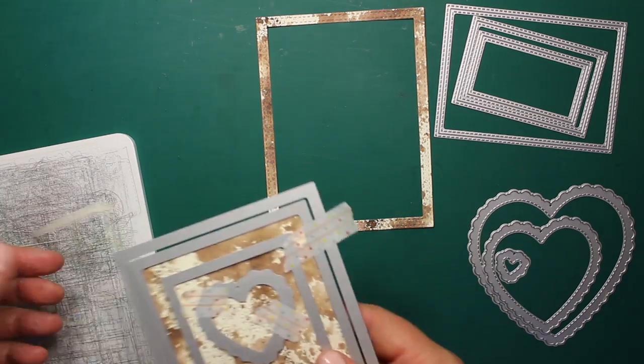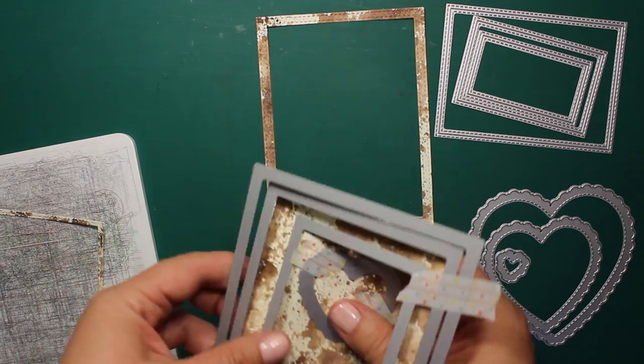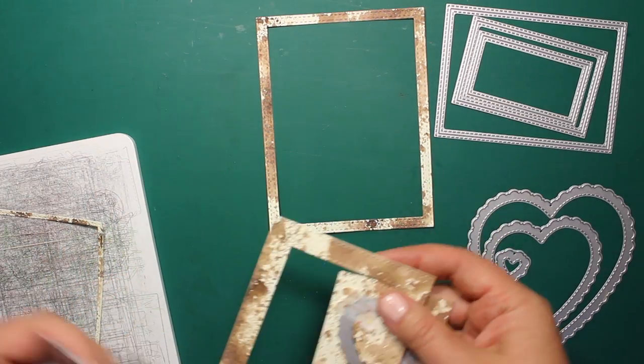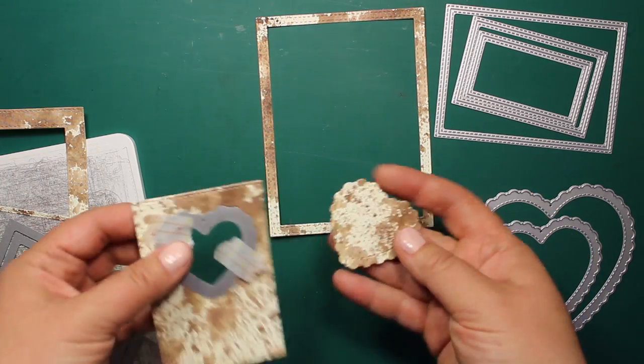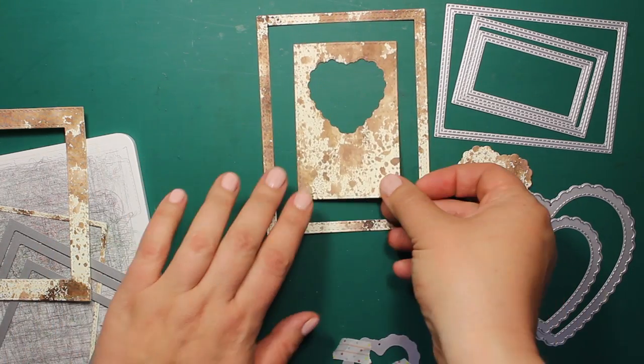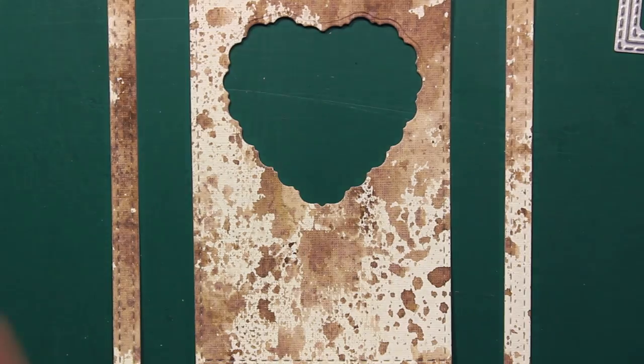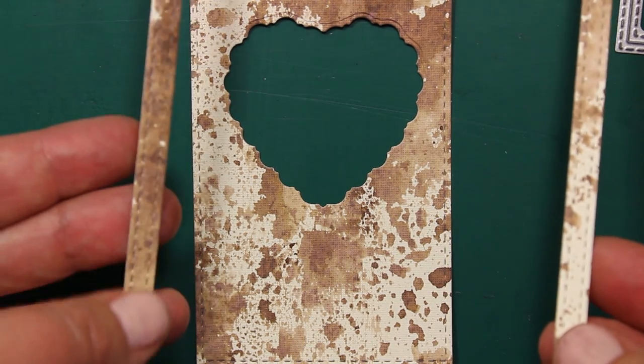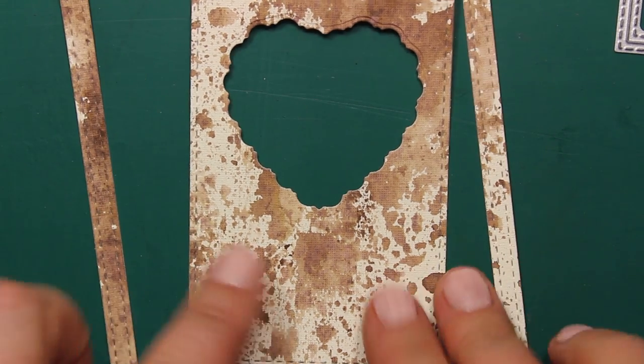I'm going to need this large frame and the panel with the heart window. Here you can see the nice stitched edges.